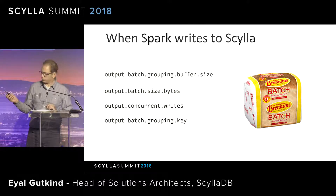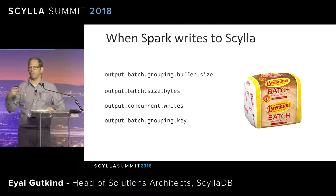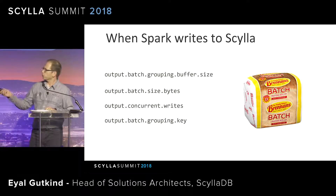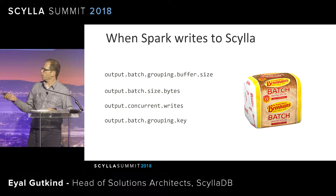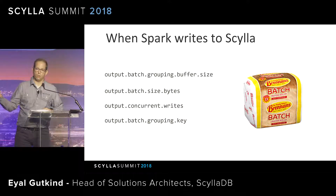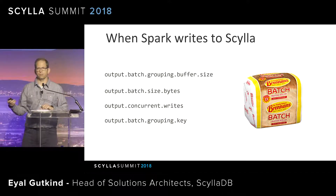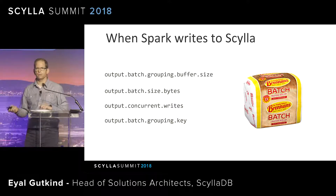One thing to note is that the maximum size per batch is one kilobyte. The default in both Scylla and Cassandra for warning on batches is five kilobytes. So if you change the batch size — and there are use cases where you want to do that — be aware it might collide with your Scylla YAML settings. You'll start getting warnings in your logs, and errors once you go beyond five kilobytes. Please make sure the batch sizes defined in your connector are aligned with what you have inside your system.